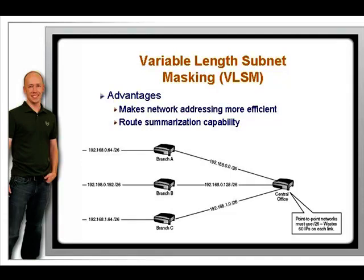The problem arises when the routing protocols are configured. Prior to VLSM, the slash 30 networks cannot be used because the slash 26 networks existed in the same system, and the classful routing protocols could only advertise one mask per class of address. All networks, including the little slash 30 links, had to use the same mask of slash 26. This wastes 60 IP addresses on each WAN link.